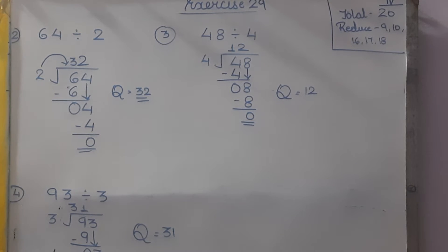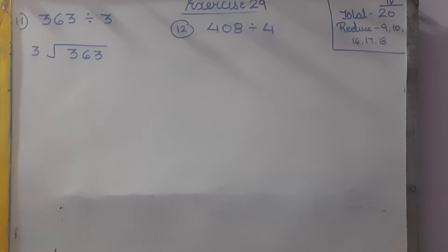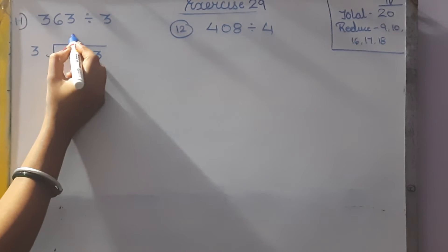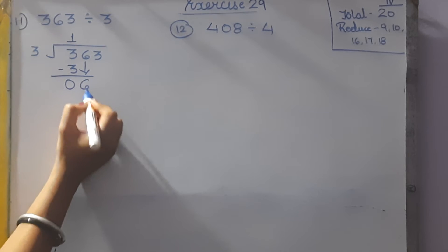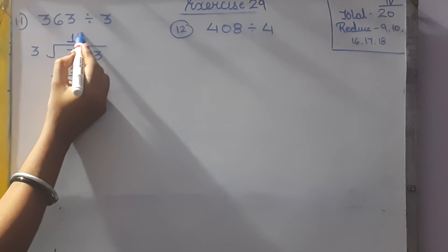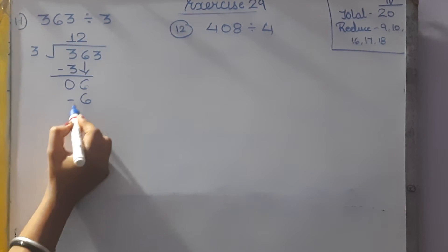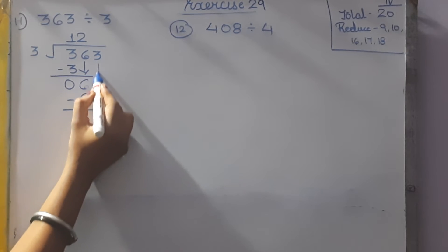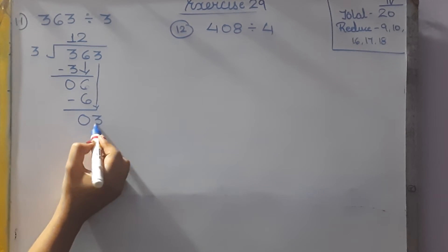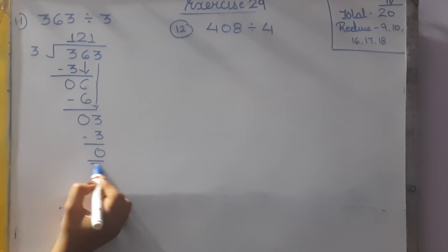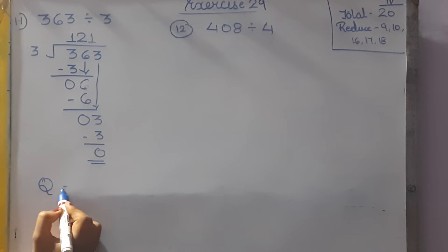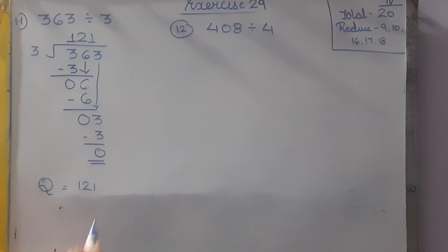I am starting from question number 11: 363 divided by 3. 3 ones are 3, so 3 minus 3 is 0. Bring down 6. 3 twos are 6, so 6 minus 6 is 0. Bring down the next number, 3. Again, 3 ones are 3, so 3 minus 3 is 0. The quotient is 121.